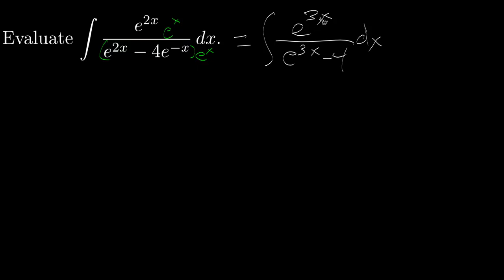Also, this e to the 3x is repeated twice. So now, we can let u be the denominator e to the 3x minus 4, and then du is 3e to the 3x dx.